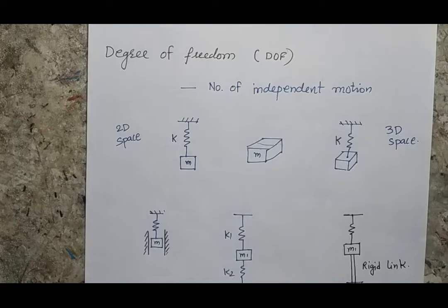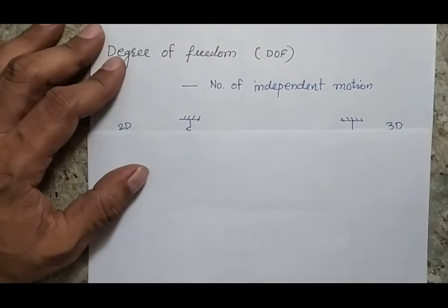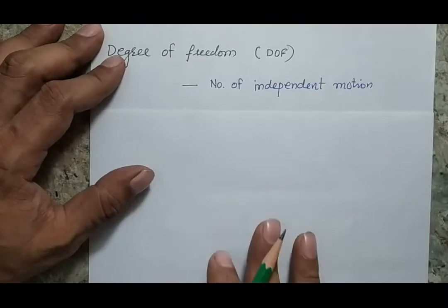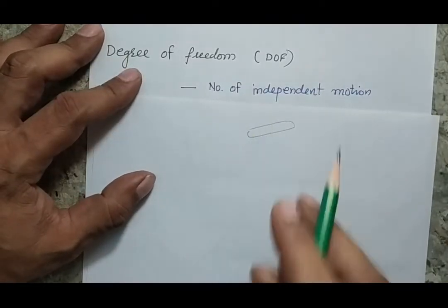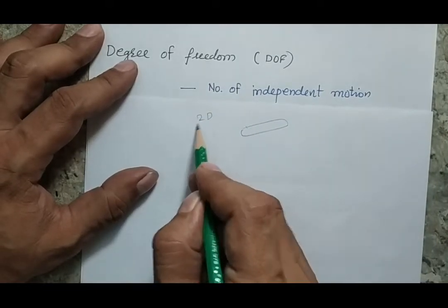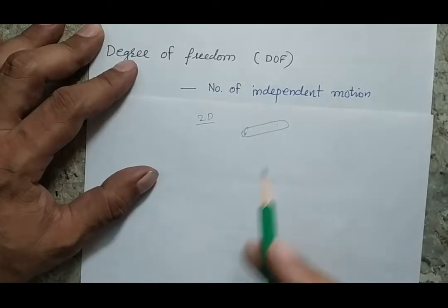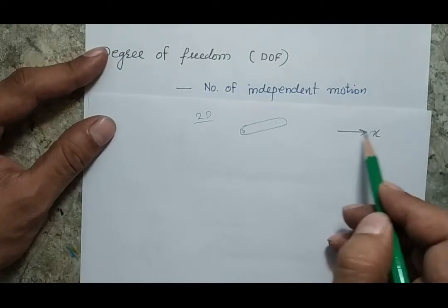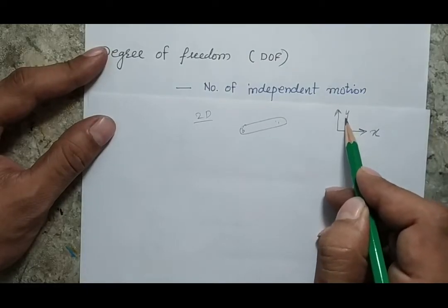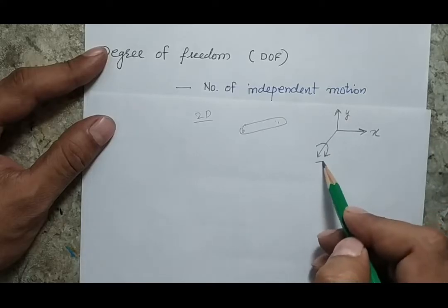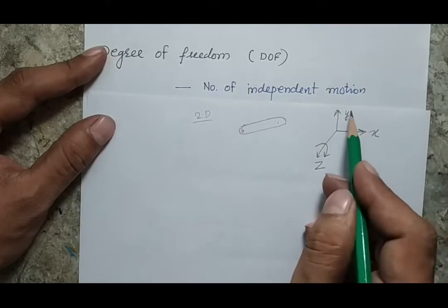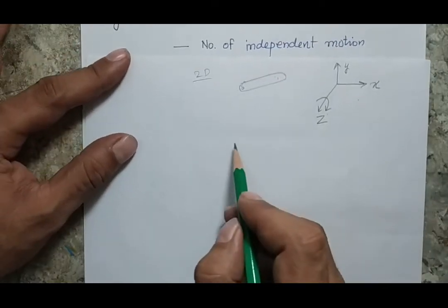Before classifying vibration, let me explain degree of freedom. The independent motions a body can exhibit are its degrees of freedom. Suppose I have a body in a two-dimensional plane — it has three degrees of freedom: one translational motion along the x-direction, another translational motion along the y-direction, and one rotational motion about the z-axis.